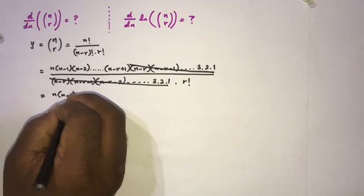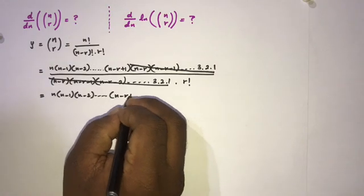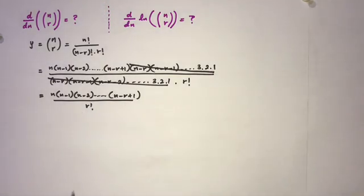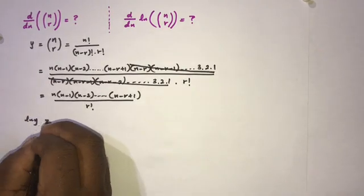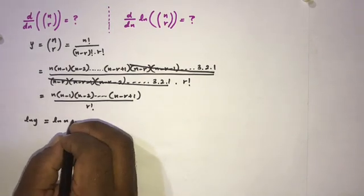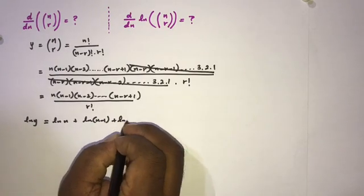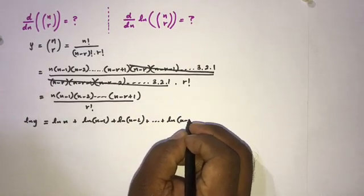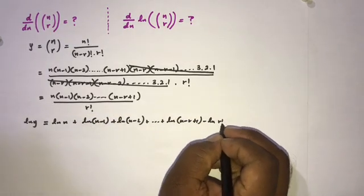After cancellation we have n times (n minus 1) times (n minus 2) times ... times (n minus r plus 1), all over r factorial. Now I am going to take the natural log of both sides. By the property of natural log we can write: ln(y) equals ln(n) plus ln(n minus 1) plus ln(n minus 2) plus ln(n minus r plus 1) minus ln(r factorial).